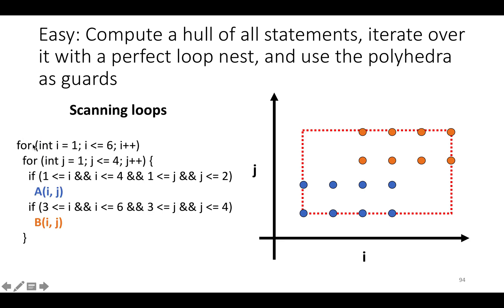This will look like one for loop for each axis. We've got two axes, i and j. So we have one for loop that goes from the min of the rectangular hull, 1, to the max, 6. Then j goes from the min along j, which is 1, to the max, which is 4. Within there, if i is between 1 and 4 and j is between 1 and 2, we execute statement a(i,j). If i is between 3 and 6 and j is between 3 and 4, we execute b(i,j).